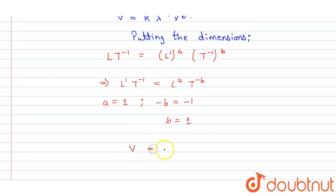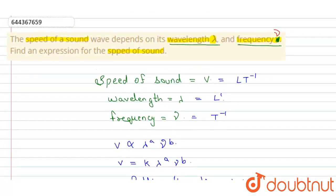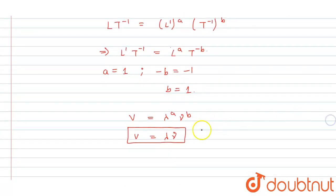So v will be equal to lambda times mu. This is our required expression for the speed of sound. That's it, thank you.